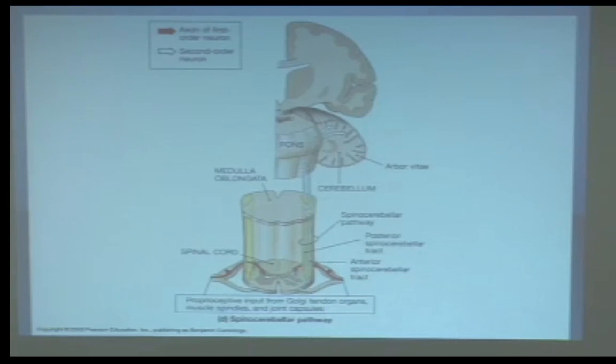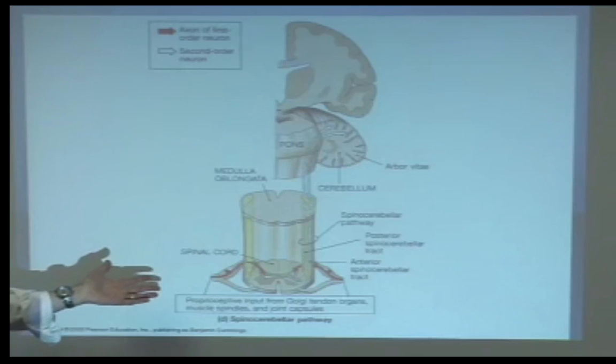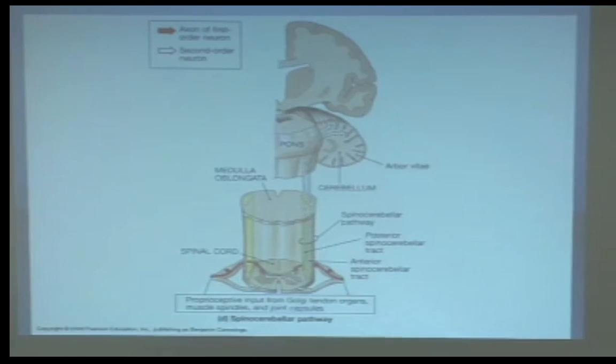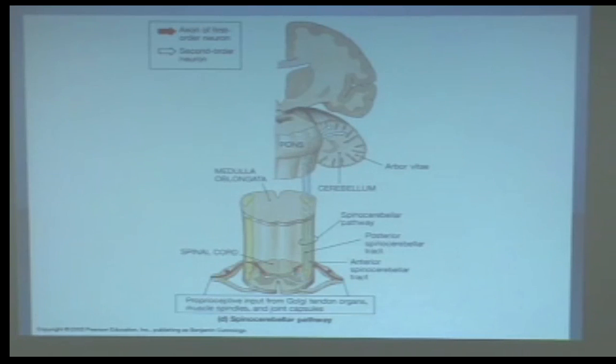Here is the spinocerebellar pathway — we've already looked at this slide. Dorsal and ventral, they're on the outside of the cord. When people have myelopathy, the first tract to be affected is the spinocerebellar tracts.